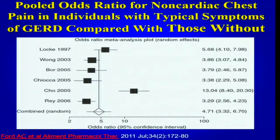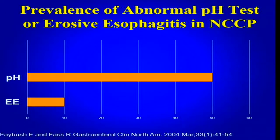When you look at patients with heartburn symptoms, a meta-analysis found that having typical GERD symptoms confers a five-fold increased risk of also reporting non-cardiac chest pain, showing an association between the two. When we look at GERD-related NCCP, studies suggest that only a small number — probably as low as 10% — will demonstrate erosive esophagitis. So most of the time it will be NERD-related NCCP, and about 50 to 60% will demonstrate abnormal esophageal acid exposure.